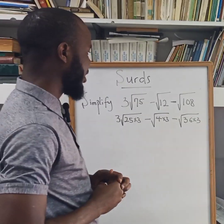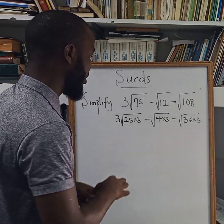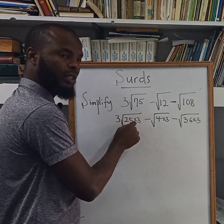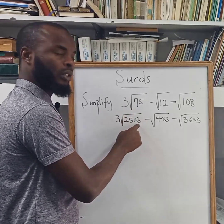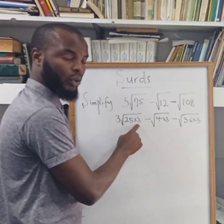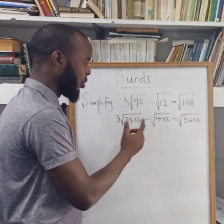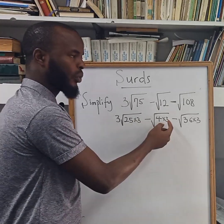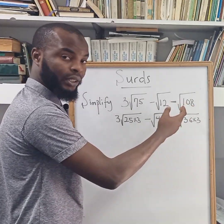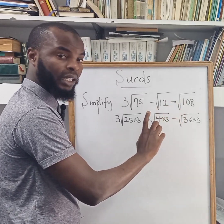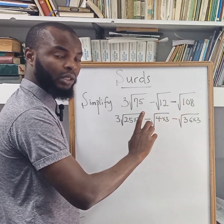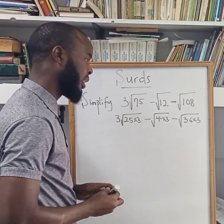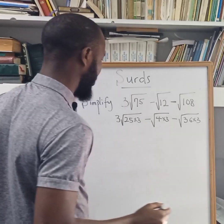An alternative way of getting this: once you've found the perfect square that can go into the number, just divide the original number by the perfect square and you'll get the other factor. Another clue is that since we've been getting 3 as the remaining factor, just divide the next number by 3 and you should get a perfect square. But if you don't get a perfect square, try another approach to find your values.